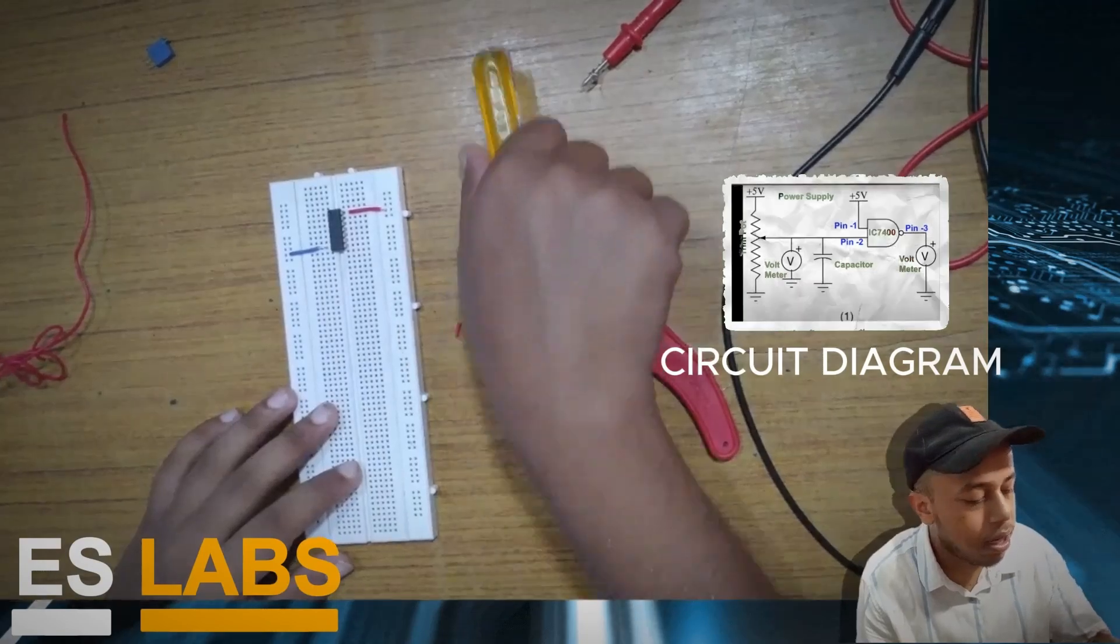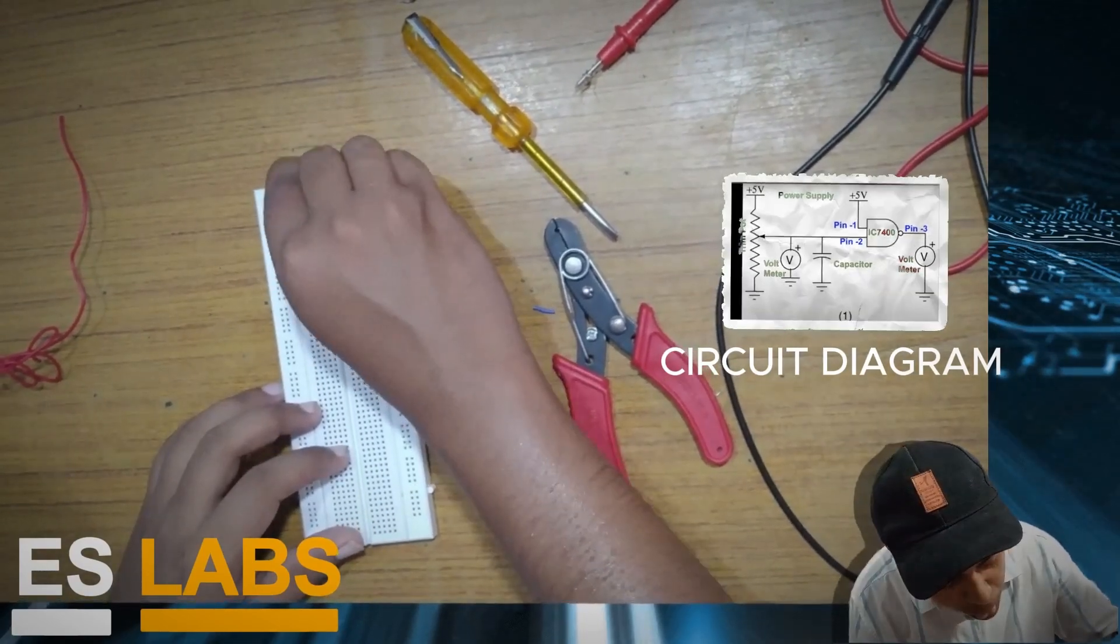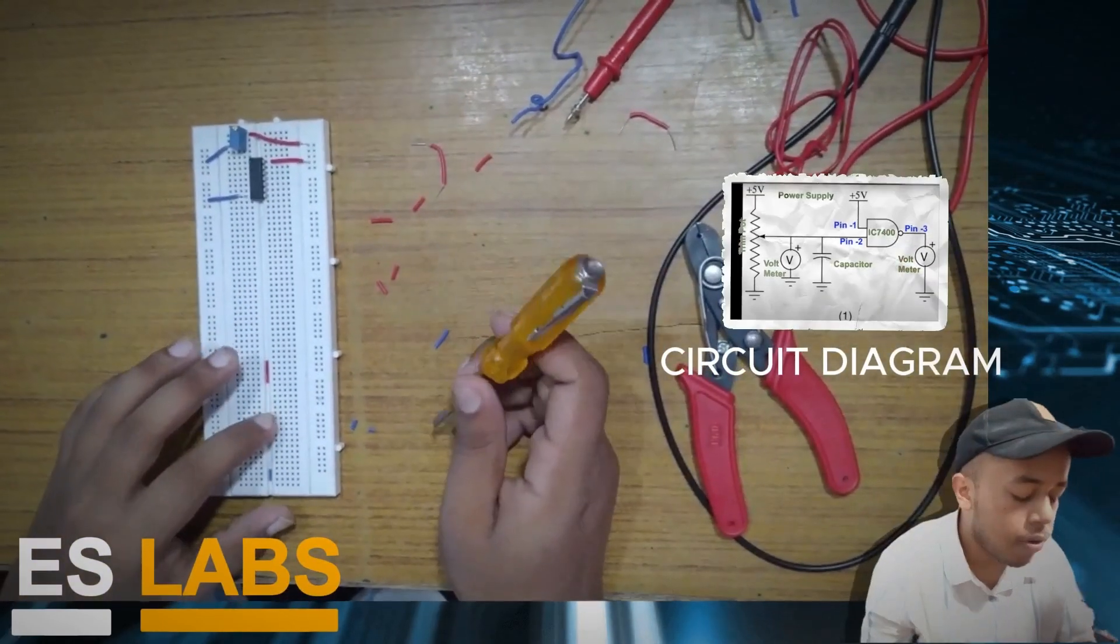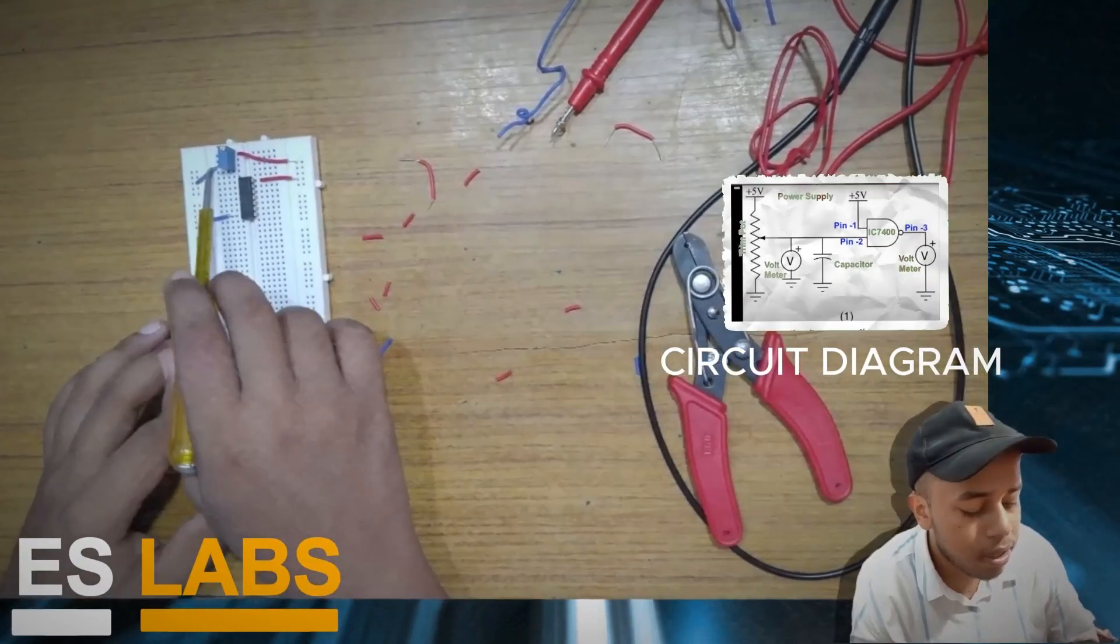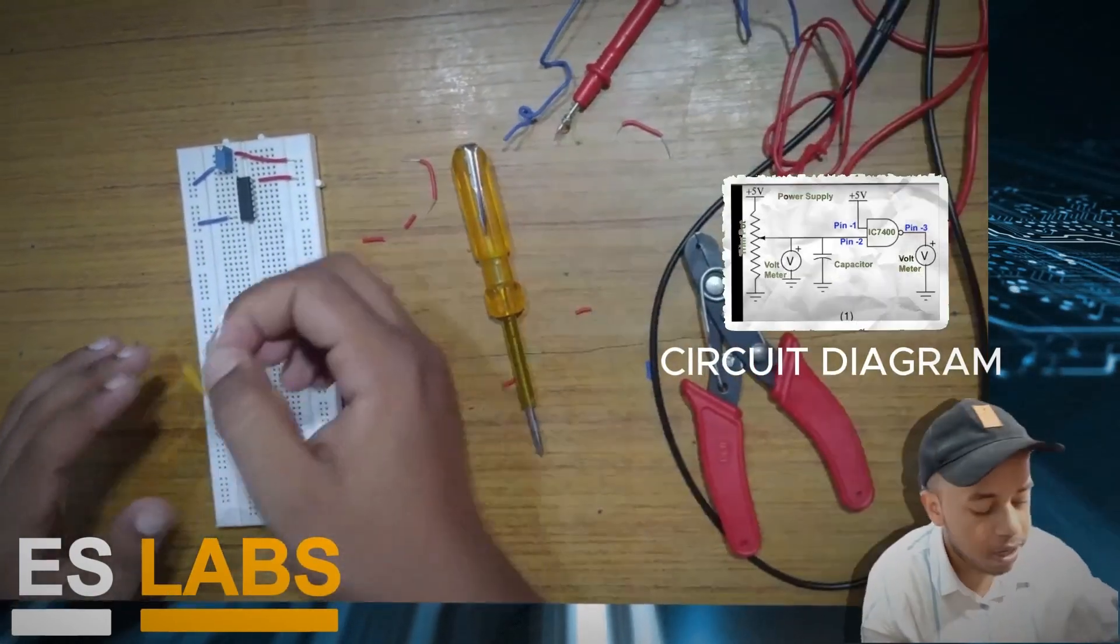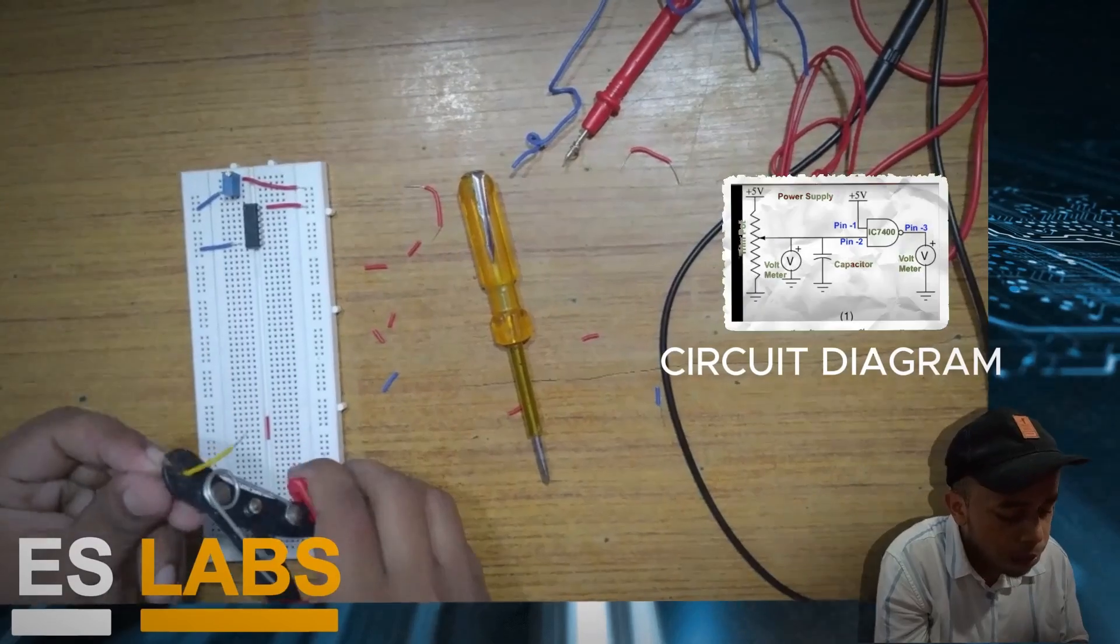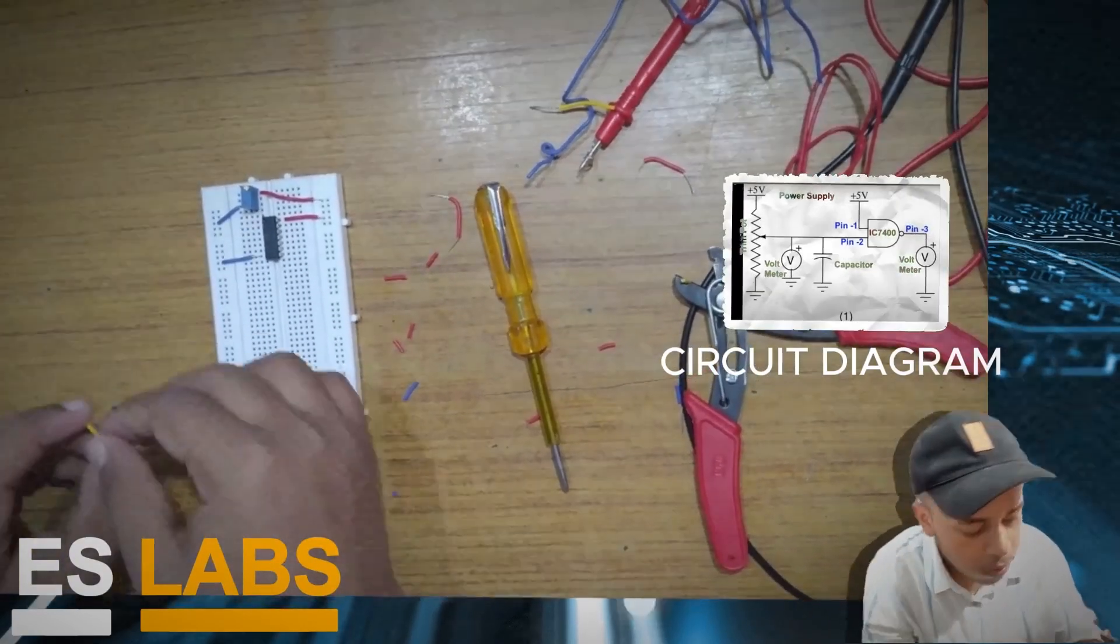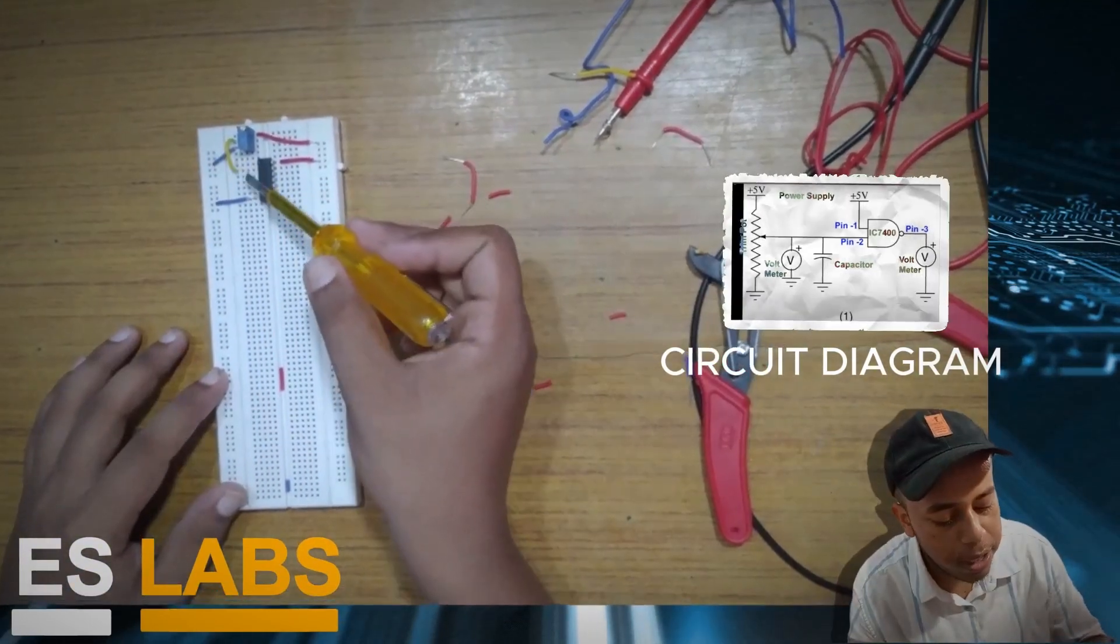And now we connect our trim pot in this circuit. So the trim pot connection is made now. One of the extreme terminals goes to VCC and the other extreme terminal goes to the ground. And the intermediate one goes to pin 2. So for connecting this we need to take our yellow wire and make our connection. And the intermediate is connected to pin 2.